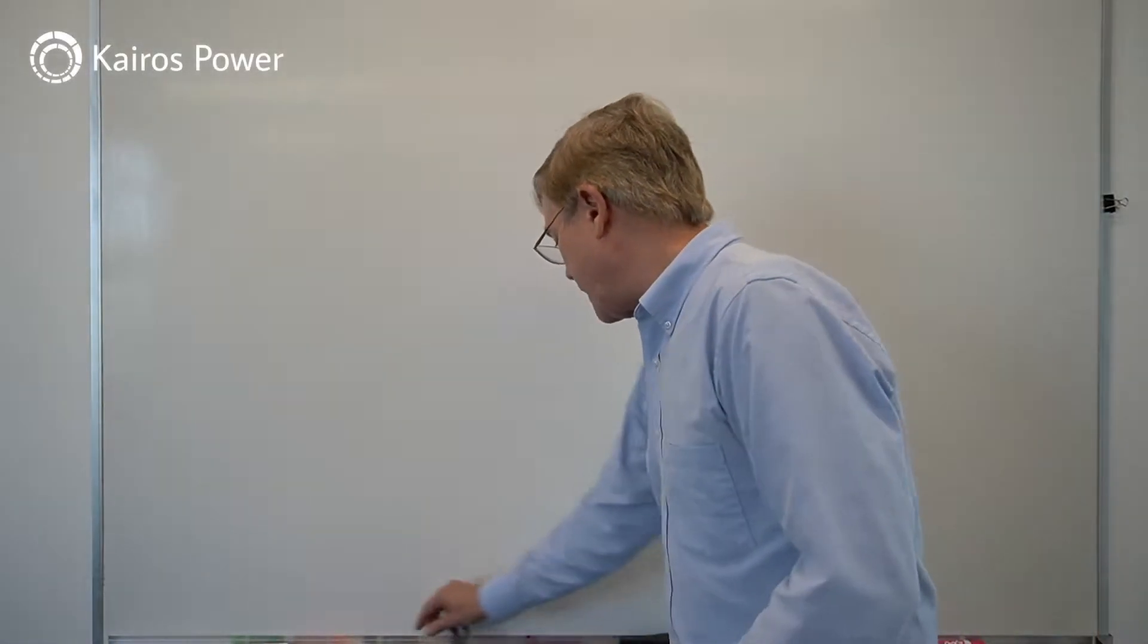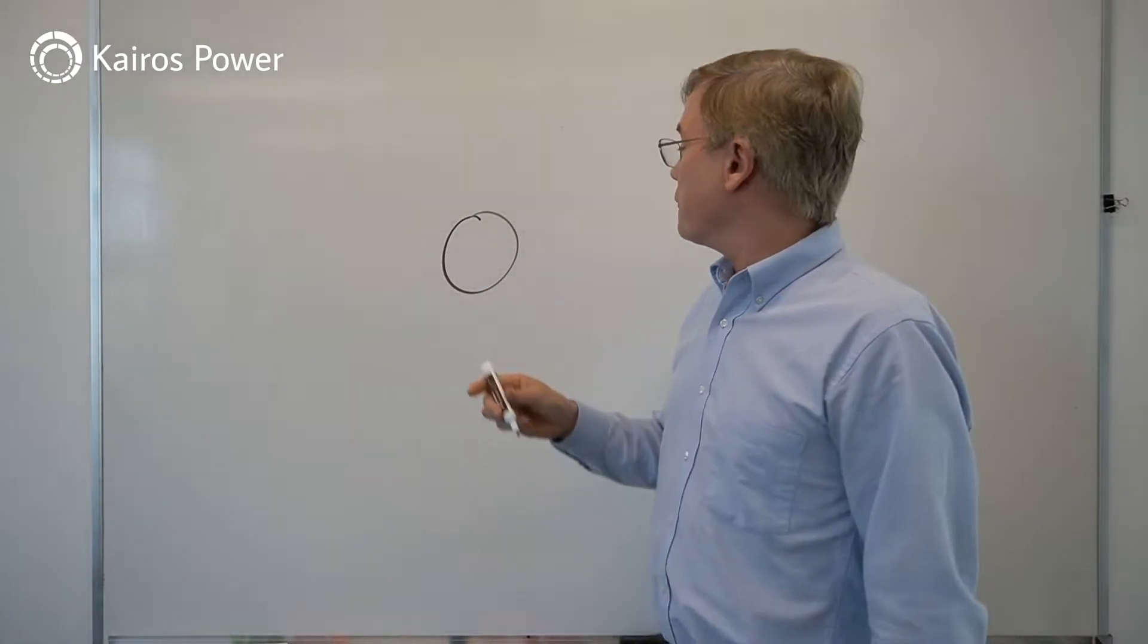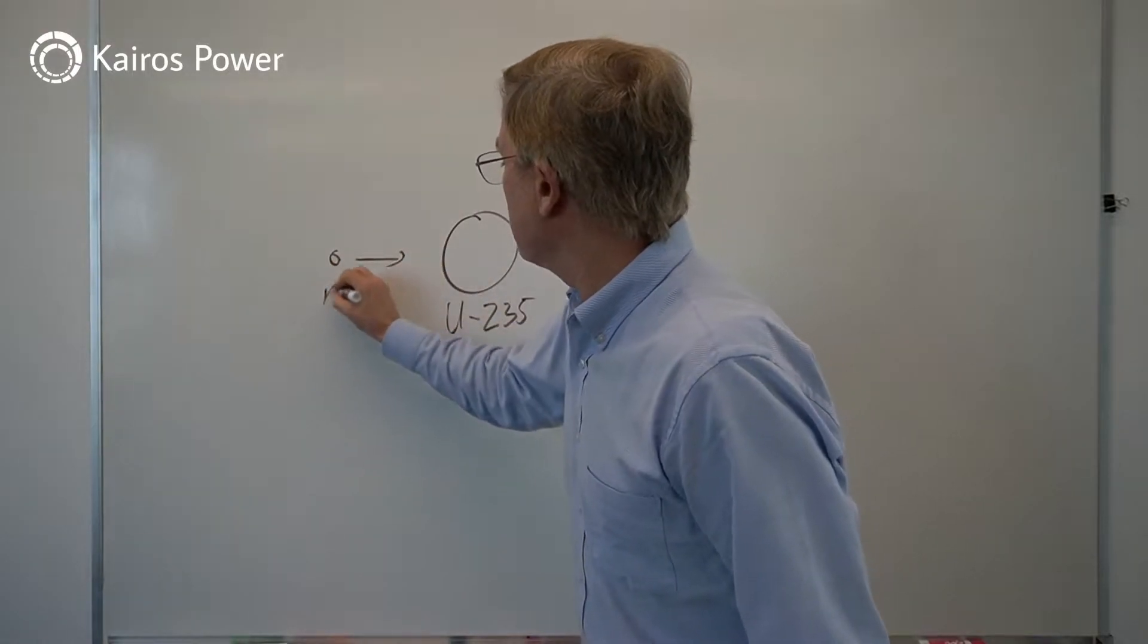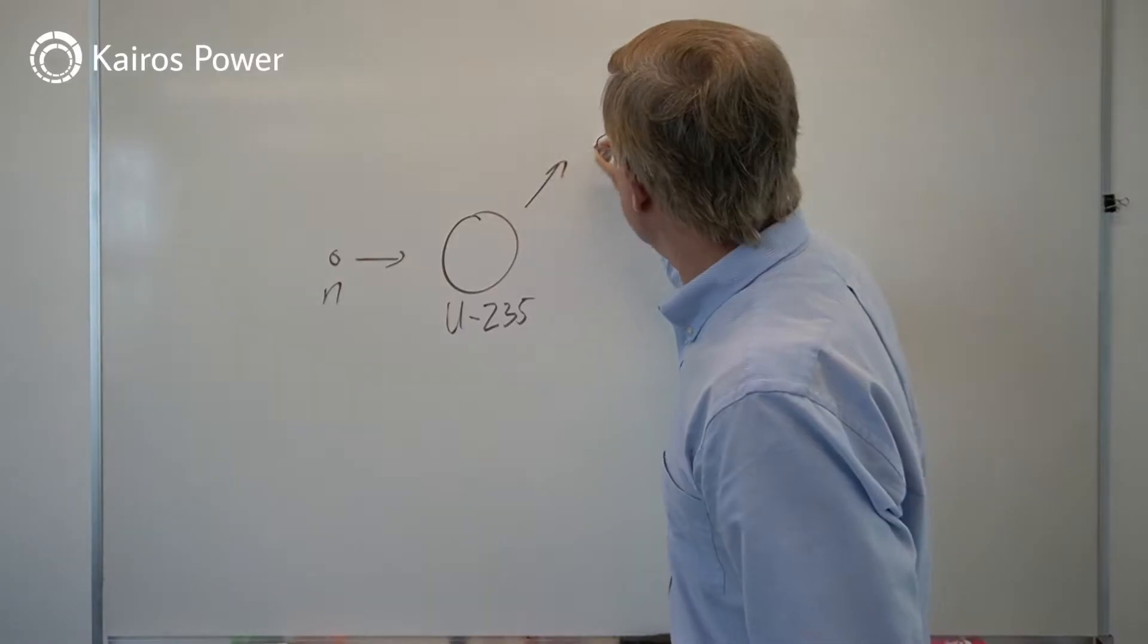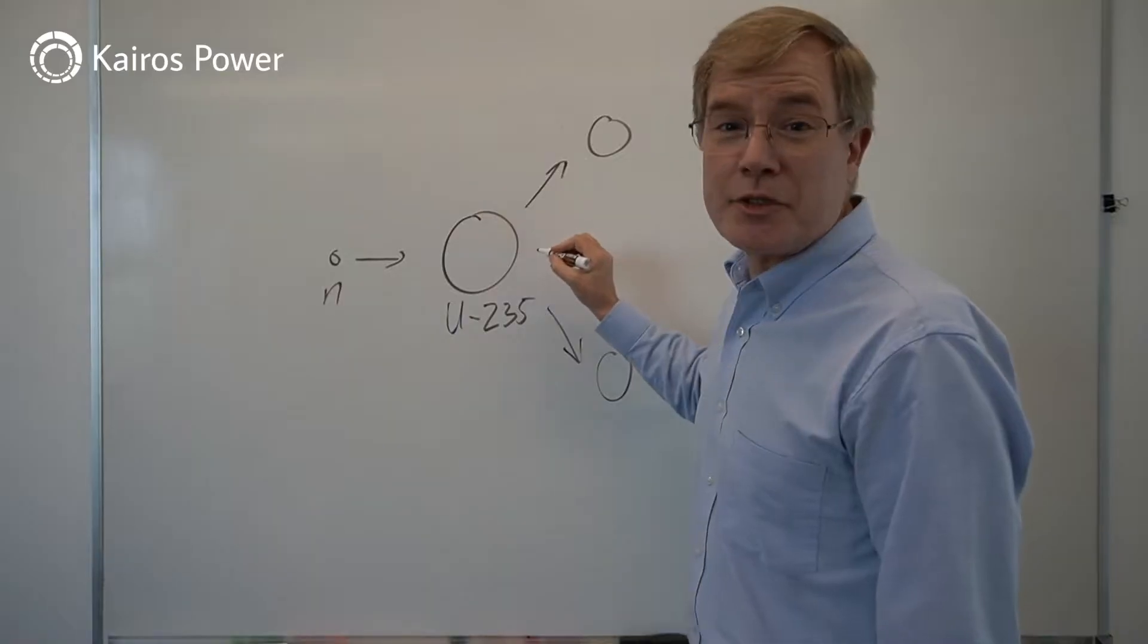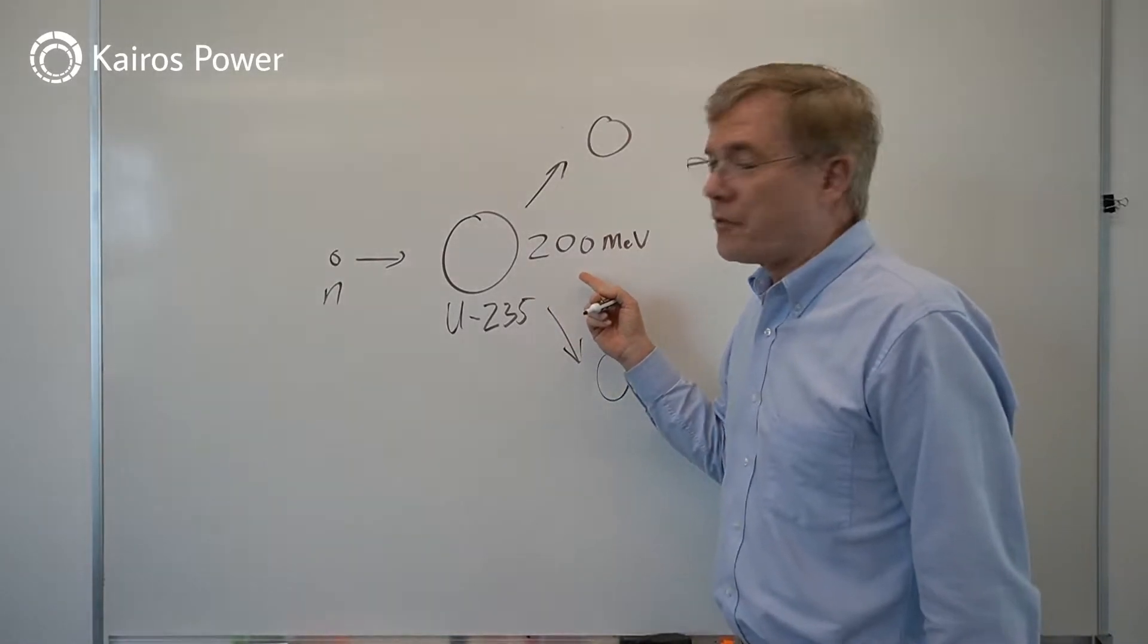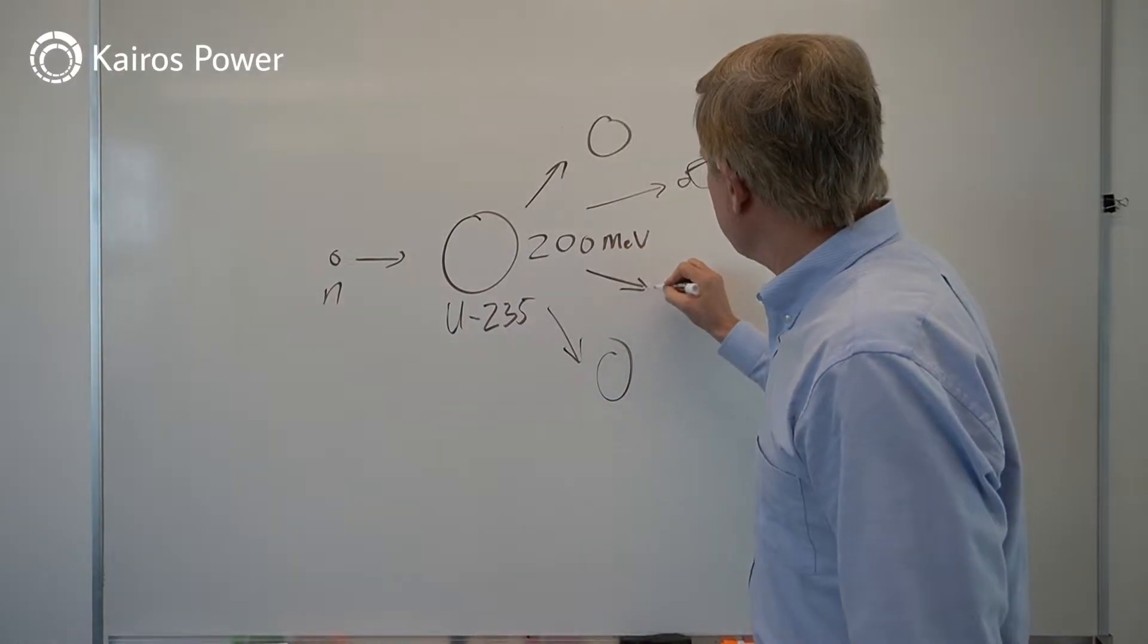And in the fission reaction, we have a nucleus of uranium-235 or other fissile materials. And we have a neutron which interacts with that nucleus causing a fission reaction which releases two fission products and an enormous amount of energy, 200 million electron volts. This is a million times more than one can get from chemical reactions. We also get additional neutrons from this reaction.